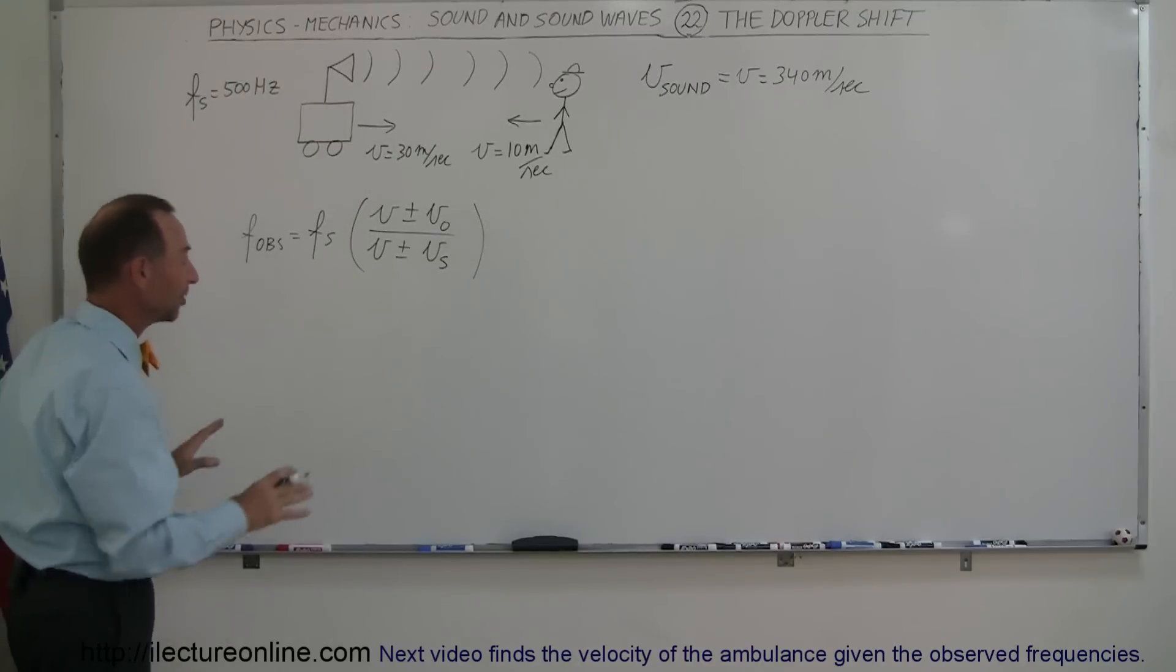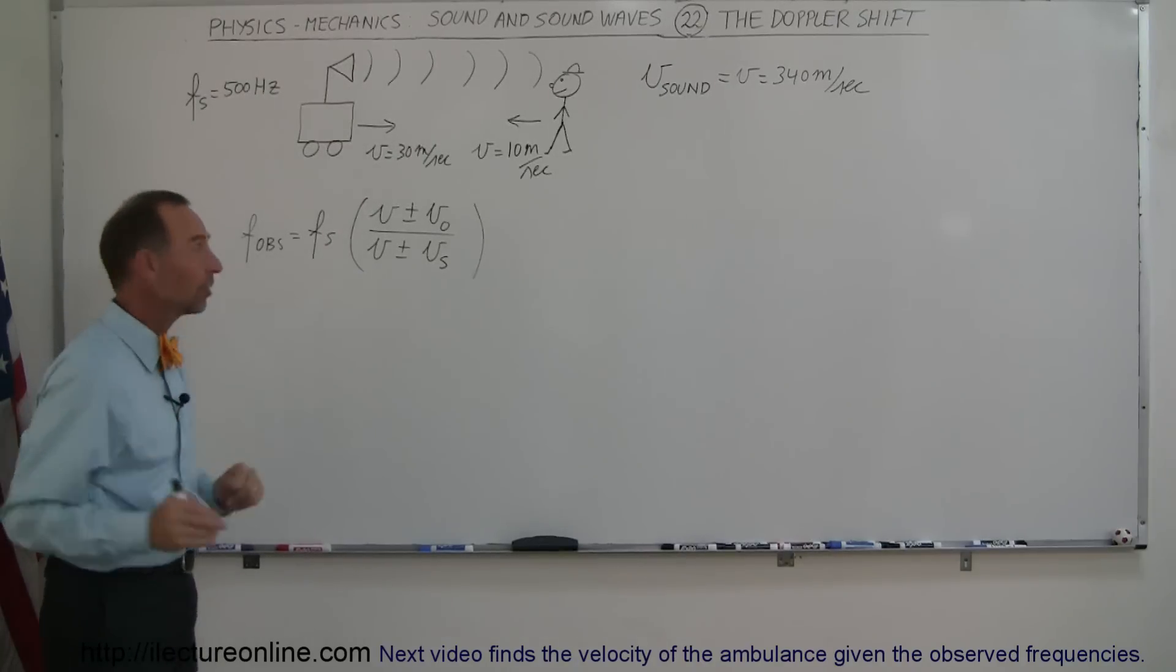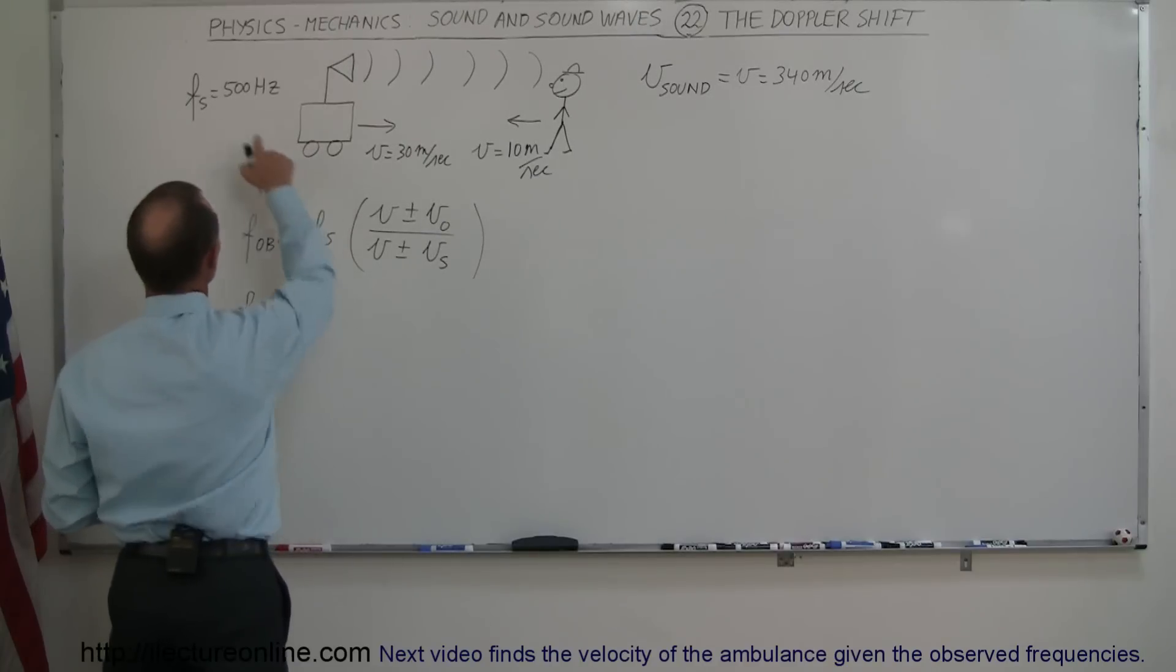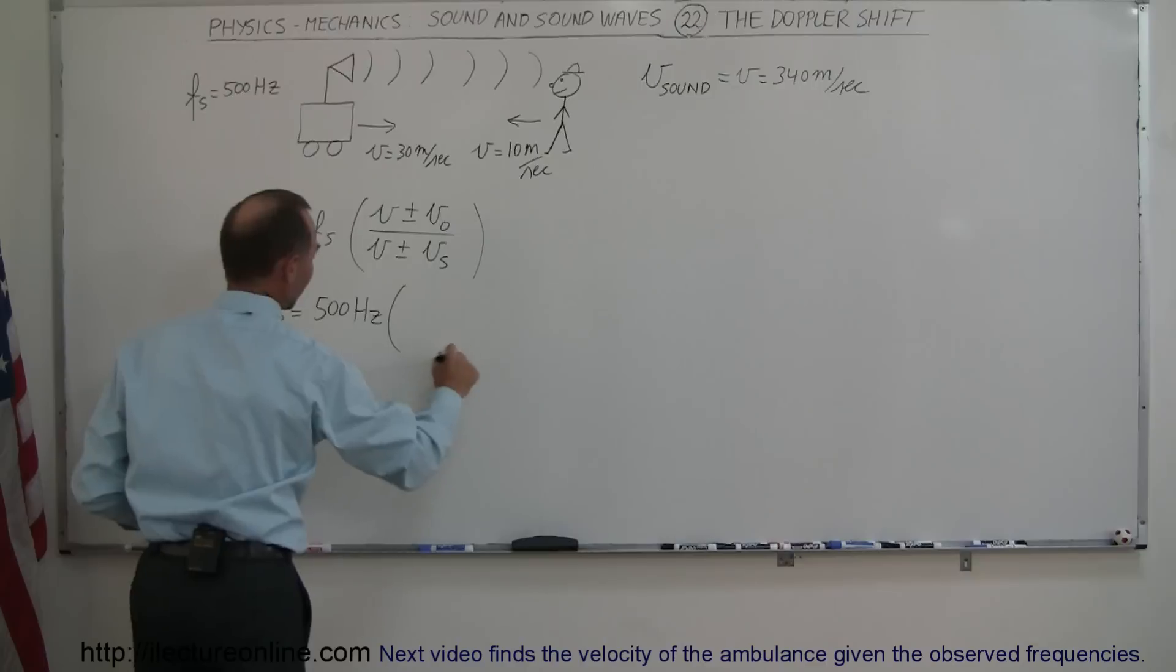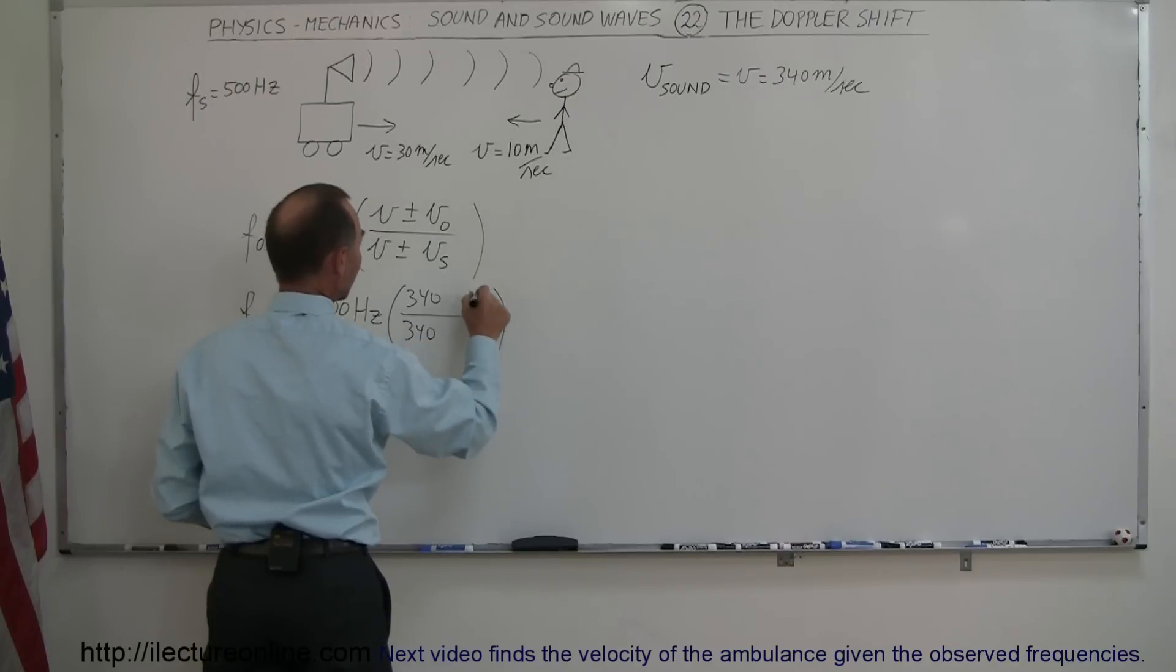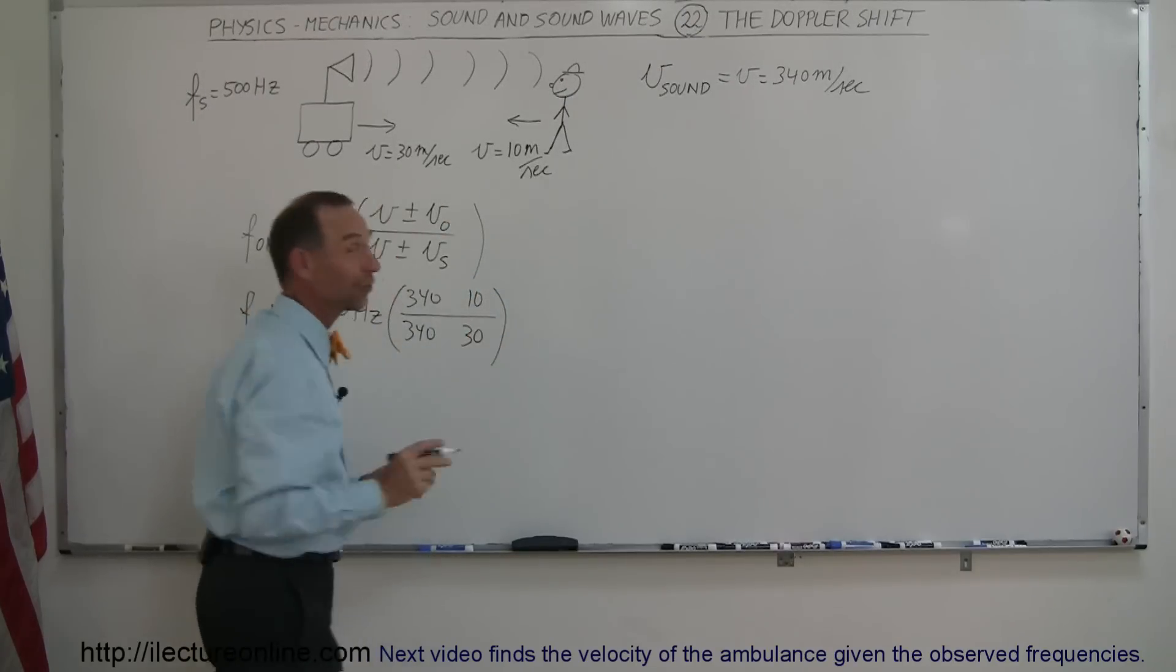Let's now plug in all the numbers and again it doesn't matter which direction everybody's moving, we just plug in the numbers. So we have frequency observed is equal to the 500 Hertz times this ratio. So we get 340, 340 and the velocity of observer is 10 meters per second, the velocity of the source is 30 meters per second. Now for the signs.